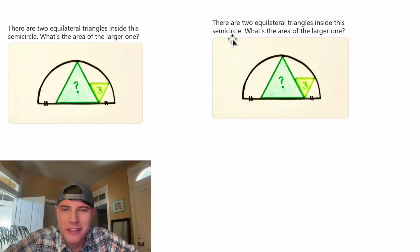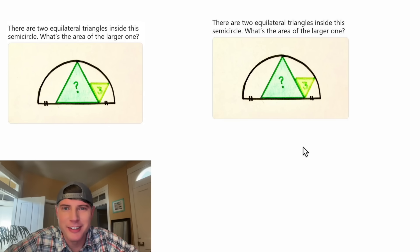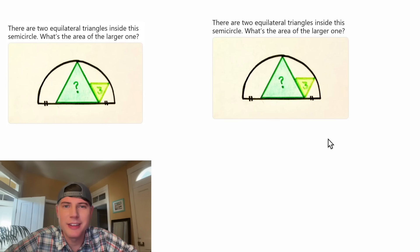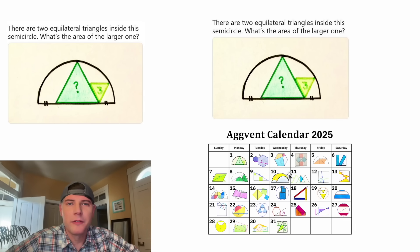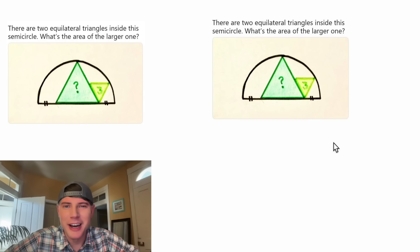Hey guys, this looks like a fun one. We're given that there are two equilateral triangles inside of this semi-circle, and it wants us to find the area of the larger triangle. We're also given that this length equals this length. This is day one of our 2025 AgVent calendar — for the month of December, we're going to solve 31 Katrina Ag puzzles. If you want to try this one, pause it right now, because I'm going to solve it.